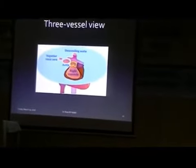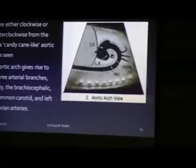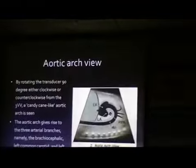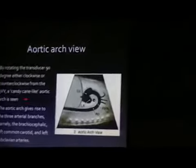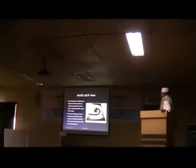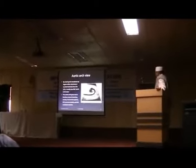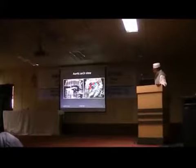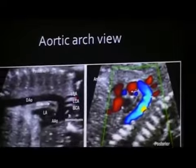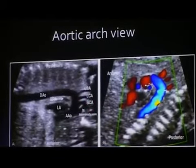This is the three-vessel view, and this is the longitudinal view of the aortic arch. From the left ventricular outflow tract view, if we rotate the transducer, then we will get the aortic arch view. The distinguishing point is that it contains the head and neck vessels. These vessels are the subclavian artery, left subclavian, left carotid, and the brachiocephalic arteries.